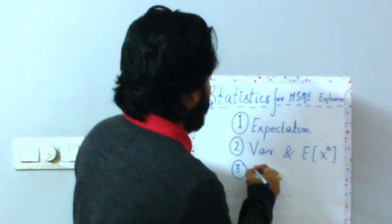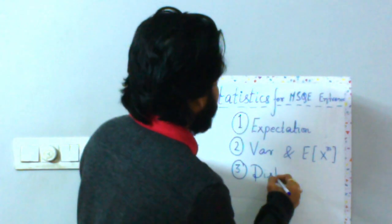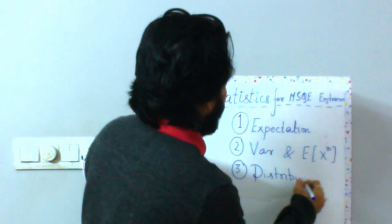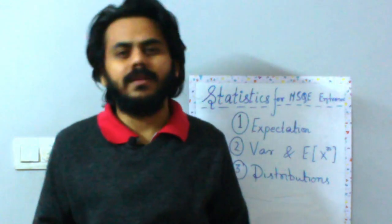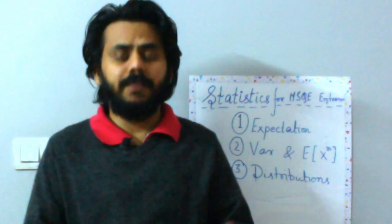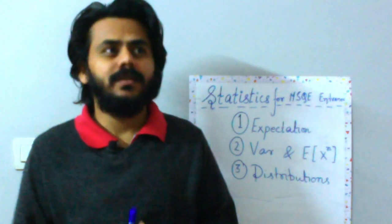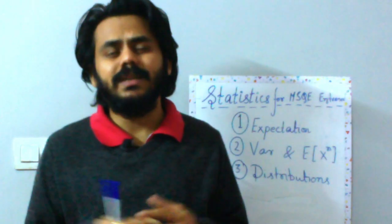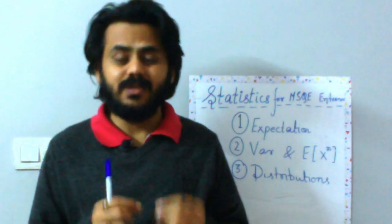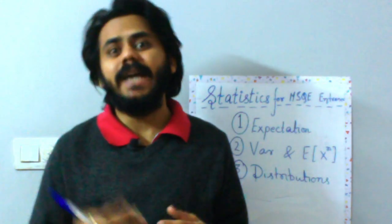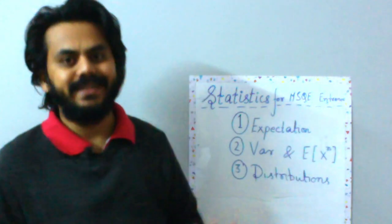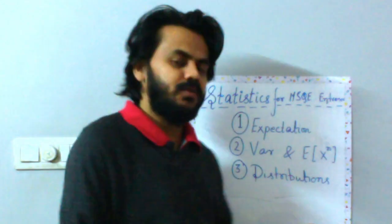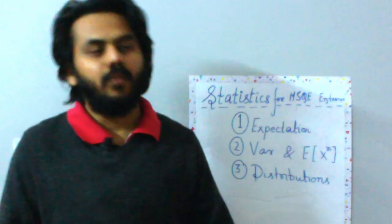The next thing is to read about distributions — statistical distributions. You have continuous distributions and discrete distributions. For continuous, the most common is the normal distribution. For discrete, Bernoulli and binomial are the most common. Uniform distribution is also a continuous distribution with high applicability. You need to know all types of distributions, their expectation, variance, and nth moments.